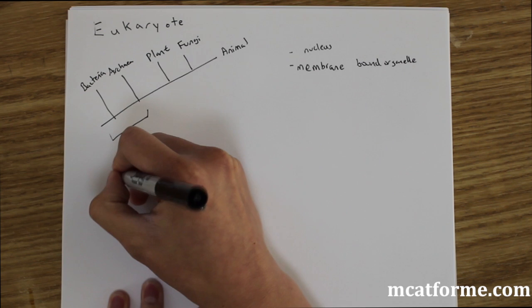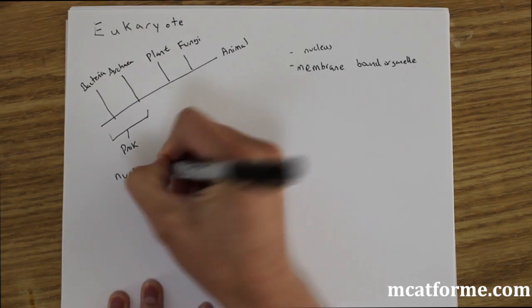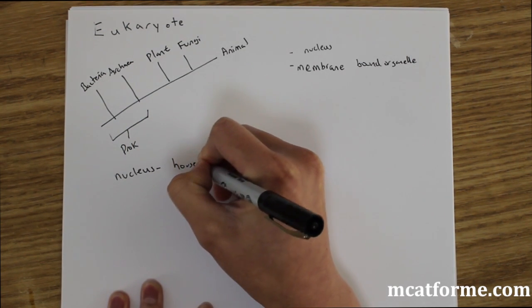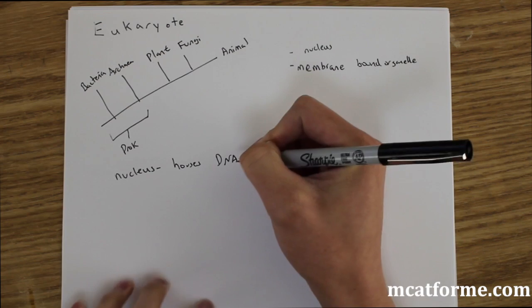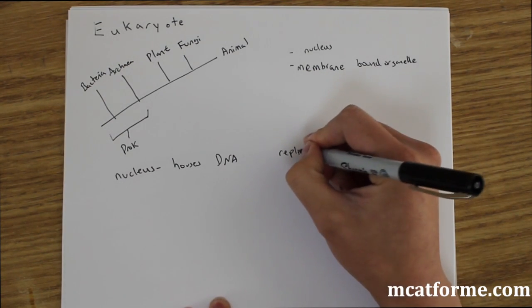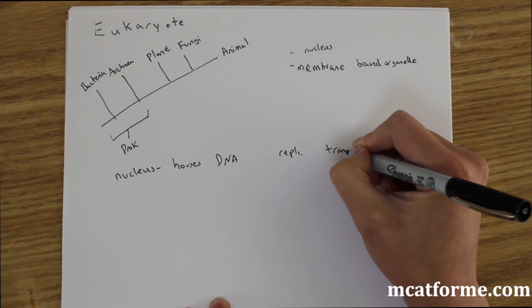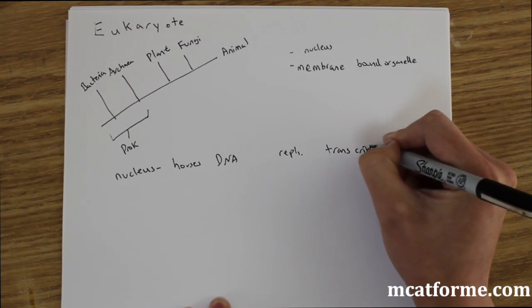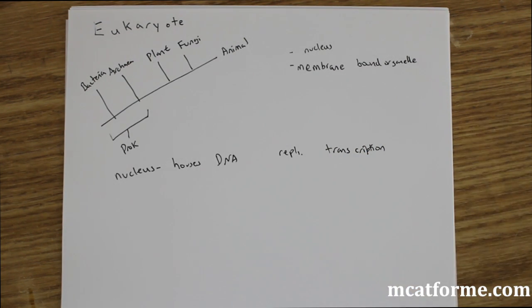Let's just start with the nucleus. A nucleus houses DNA. That one should be pretty obvious. It houses your genetic material, and it's the site of replication and also transcription. And just to throw it out there, translation would occur in the cytoplasm.